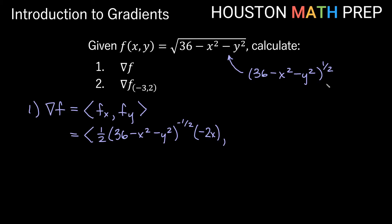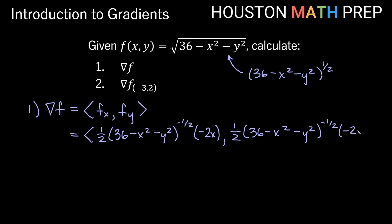For partial fy: similarly, one-half comes out front, we keep (36 - x² - y²) to the negative one-half. Now with respect to y, the 36 and x² term are constants, so the derivative of the inside is just -2y. Now we just need to clean up the vector a bit.